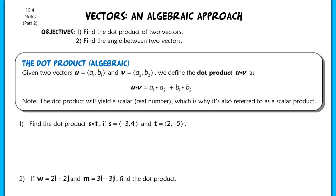This lesson is part 2 of section 10.4. Today we're going to be finding the dot product of two vectors, which we will define in just a second, and we are also going to find the angle between two vectors. So let's jump right in to the algebraic definition of the dot product.